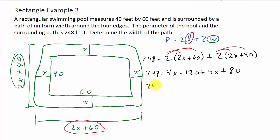That should be an equal sign. 248 equals, combining like terms, 8x plus 200. Then I'm going to subtract 200 from both sides. So that is 48 equals 8x. And then we divide both sides by 8.